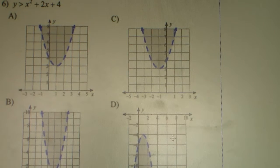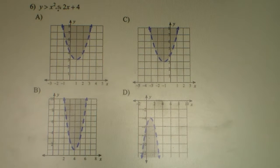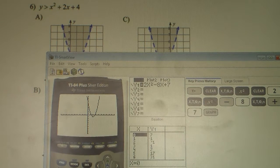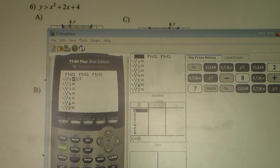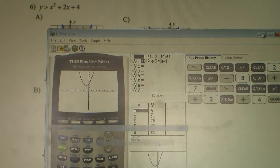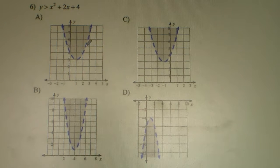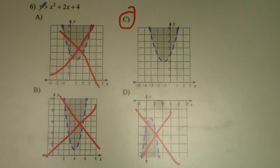Problem number 6 says Y is greater than X squared plus 2X plus 4. We type that into the graphing calculator and hit graph. We see our graph is mostly in quadrant 2 with a little arm going into quadrant 1. So let's eliminate: A is incorrect, B is incorrect, D is incorrect. By process of elimination, we know it's C. Also, since it's greater than, it's a dashed line. And Y is greater than X squared, so it's going to be shaded inside the parabola going up.